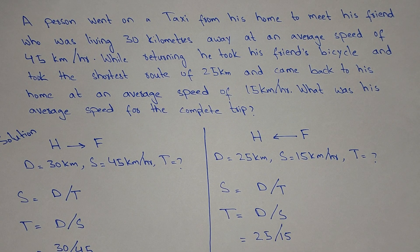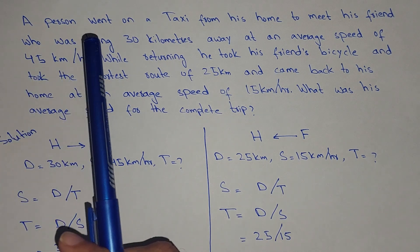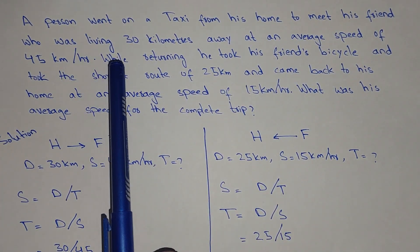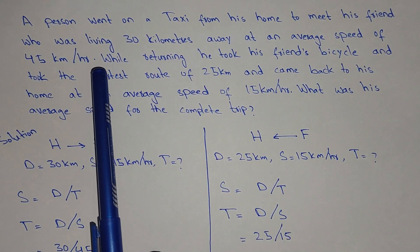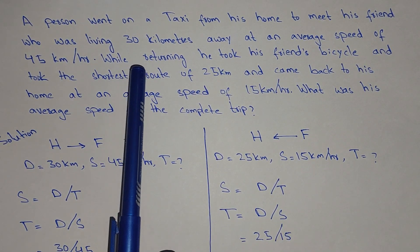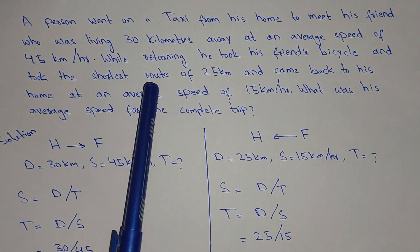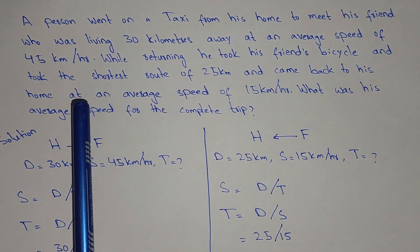Hello, what's up guys, welcome to the new video. In this video we will learn about a word problem related to speed, time, and distance. The problem says a person went on a taxi from his home to meet his friend who was living 30 kilometers away, at an average speed of 45 kilometers per hour. While returning, he took his friend's bicycle and took the shortest route of 25 kilometers.